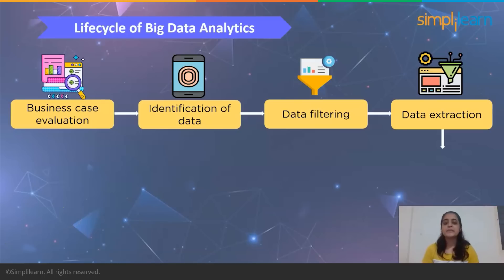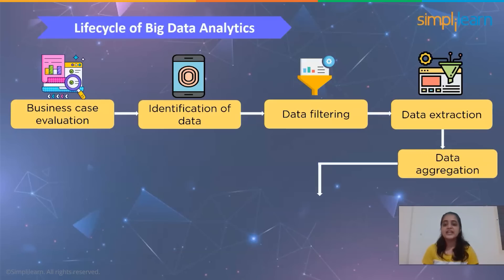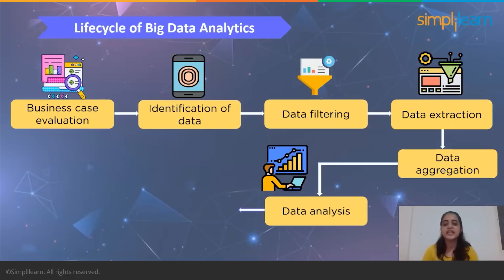Once data is filtered, there may still be entries that are incompatible. To rectify this, a separate extraction phase is created where data that doesn't match the underlying scope of the analysis is extracted and transformed. In data aggregation, data sets are validated and combined via a common field. For instance, a student academic section data set and a student personal details data set can be joined together via a common field such as roll number. Analysis can be classified as confirmatory analysis and exploratory analysis.